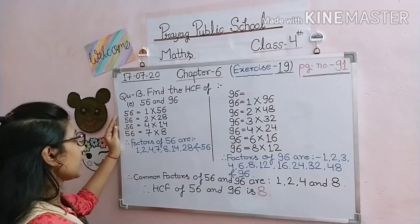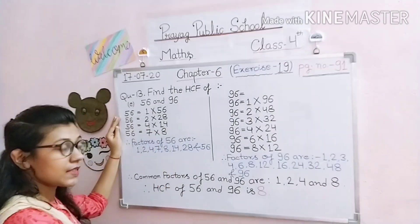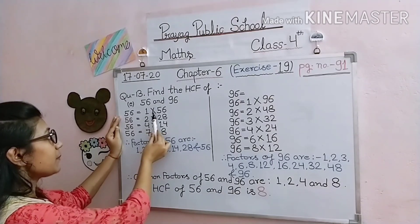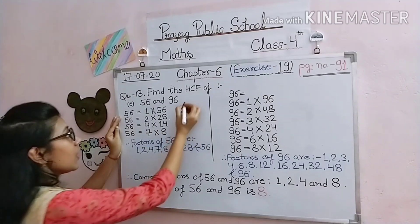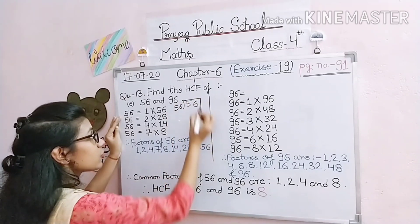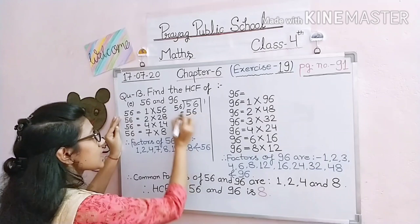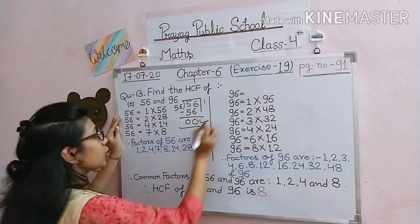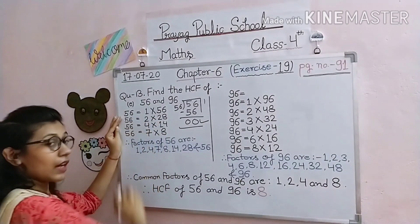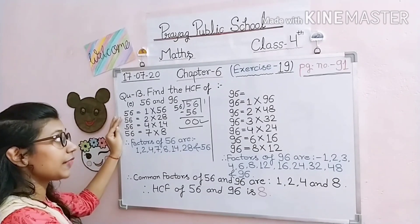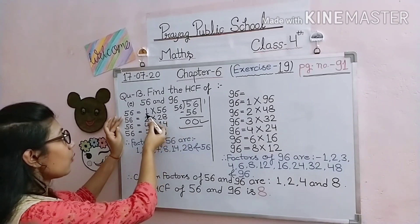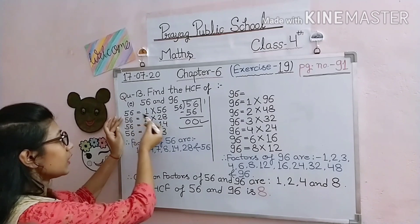Now let's find the factors of 56. We start from 1. We check whether 56 is divisible by each number — if 56 divides completely with zero remainder, then that number is a factor. So dividing: 1 multiplied by 56 gives 56, so 1 and 56 are factors. 2 multiplied by 28 gives 56, so 2 and 28 are factors.